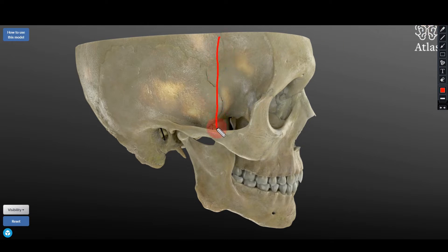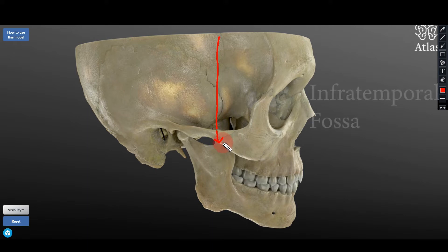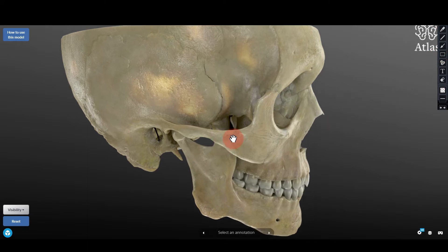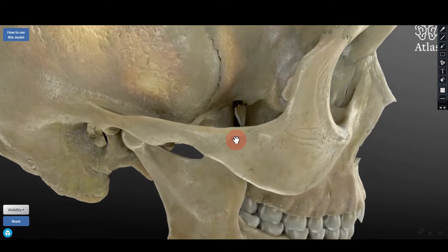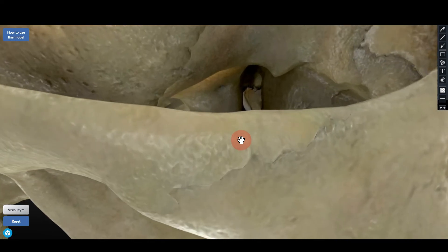From the temporal fossa, if you put a probe underneath the zygomatic arch, the tip of the probe is going to reach here. Going medial to the zygomatic arch, that region where the tip of the arrow is now located is called the infratemporal fossa — as the name indicates, it is below the temporal fossa.